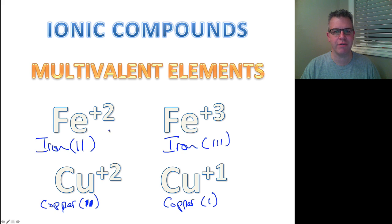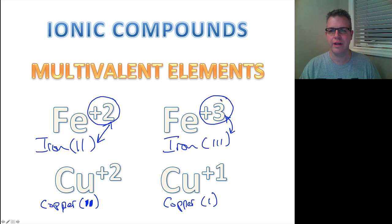So again, having an understanding of our Roman numerals, these two numbers are exactly the same. Iron(II) means we're dealing with the multivalent ion that has a charge of 2. If we have a 3, we are dealing with the multivalent ion that has a charge of 3. Very simple to understand.